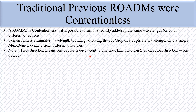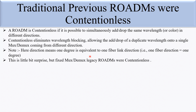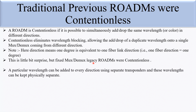Note that one direction is equivalent to one fiber link direction. This is a little surprising, but fixed mux/dmux legacy ROADMs were contentionless. A particular wavelength can be added to every direction using a separate transponder, and these wavelengths can be kept physically separate. This is the reason that the previous or legacy mux/dmux ROADM was contentionless.